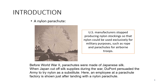Nylon could be used for parachutes for airborne troops. The US Army used parachutes during World War II. Before World War II, parachutes were made of Japanese silk. When Japan cut off silk supplies during the war, DuPont persuaded the army to try nylon as a substitute. Here, an employee at a parachute factory is shown just after landing with a nylon parachute.